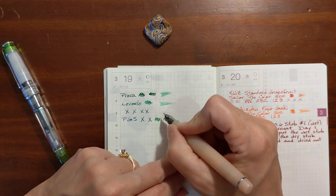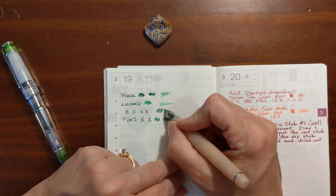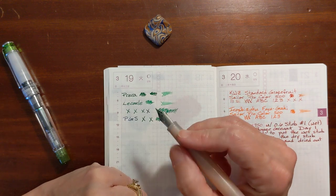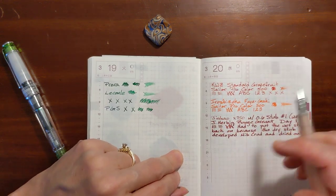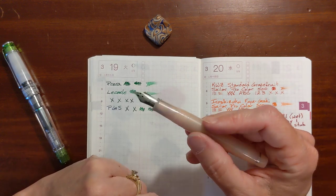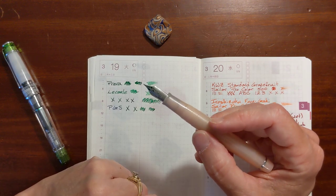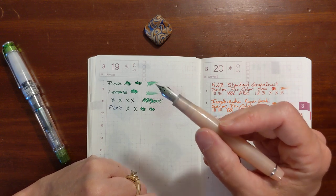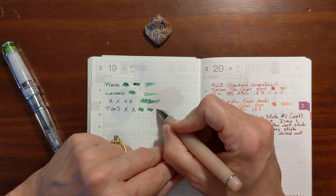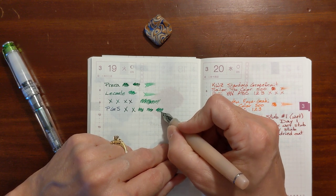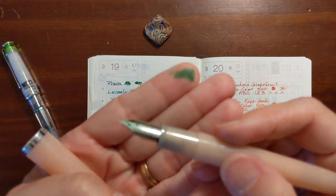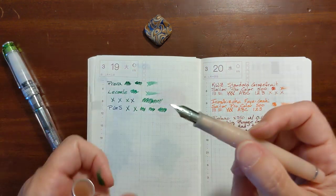But the line that the Prera is putting down definitely looks a little darker. I think it's going to be more dependent on what type of ink you use. Your writing experience is going to be more dependent on what type of ink you use. And for a pen like this, this is stereotypical Sailor. It's got that feedback.